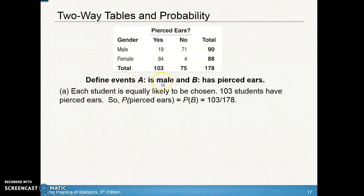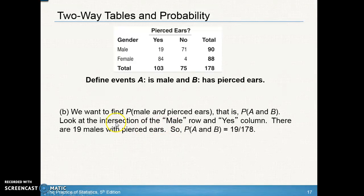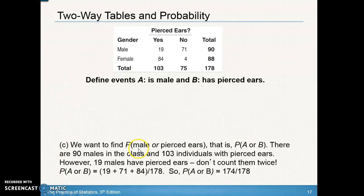Let A equal male and B equal pierced ears. Each student is equally likely to be chosen. 103 students have pierced ears out of a total of 178 — that fraction is important to show. For male and pierced ears, find that intersection in the table: 19 males with pierced ears out of 178 total. For male or pierced ears, add 19 plus 71 plus 84, which gives 174 out of 178.